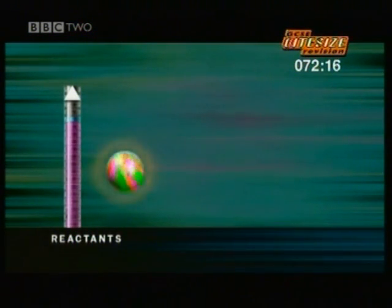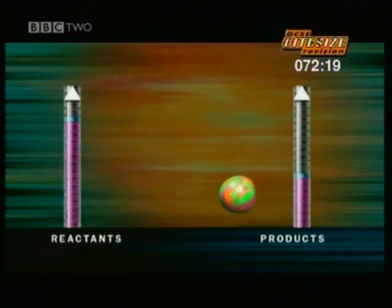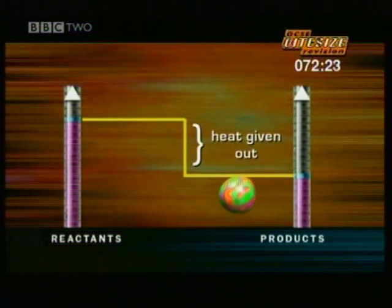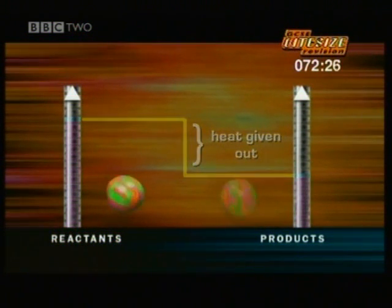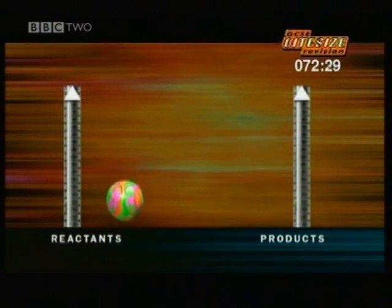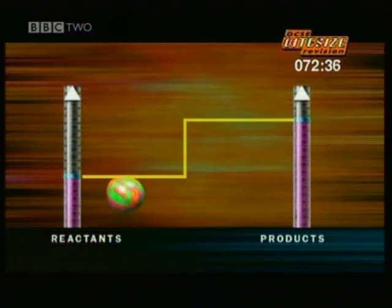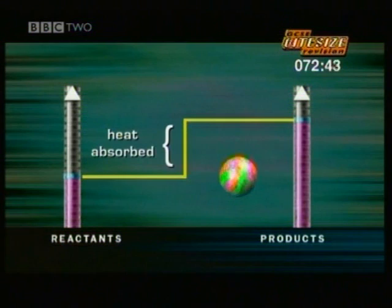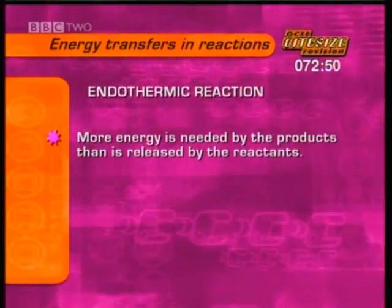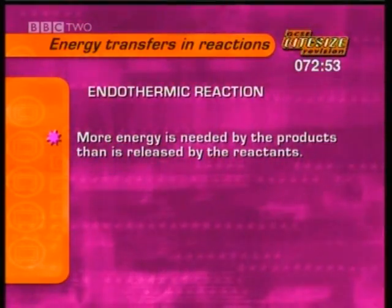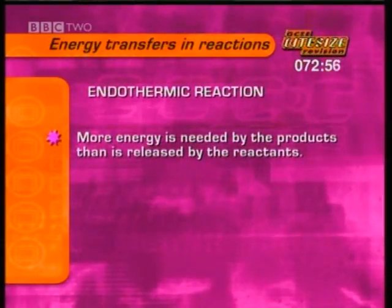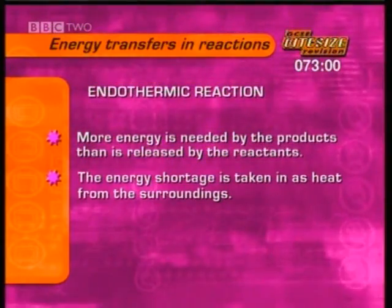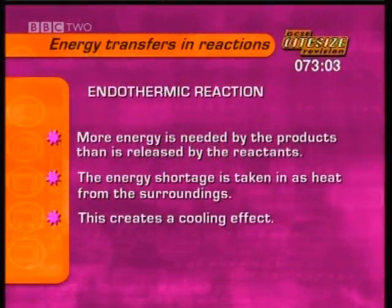An energy level diagram shows why. In exothermic reactions, there's more energy in the reactants than in the products, so heat energy is given out when the reaction goes ahead. But in endothermic reactions it's the other way round — the reactants have less energy than the products. That means the reactants have a huge energy hill to climb for the reaction to go ahead. They must steal the energy they need from the surroundings, which is why the temperature drops. In an endothermic reaction, more energy is needed to chemically bond the products than is released by breaking the bonds of the reactants. This energy shortage is taken in as heat from the surroundings, creating the cooling effect.